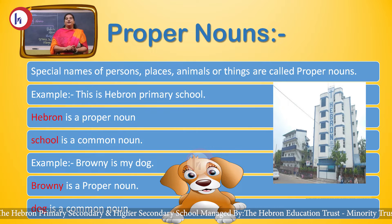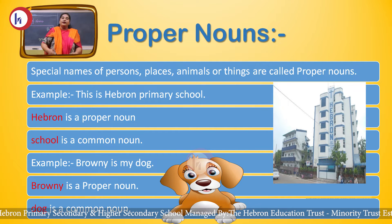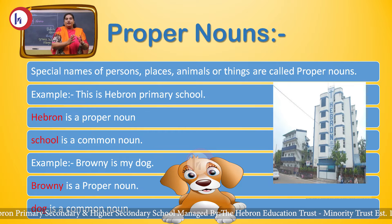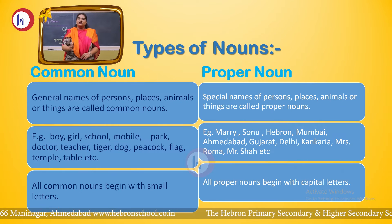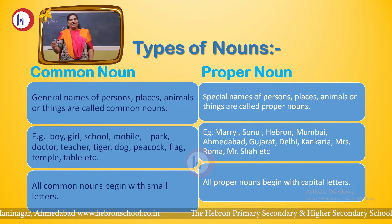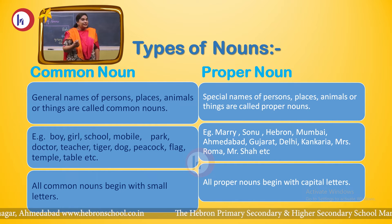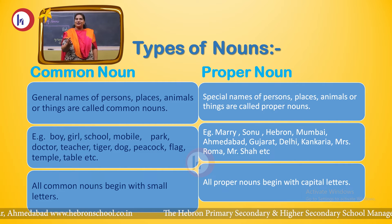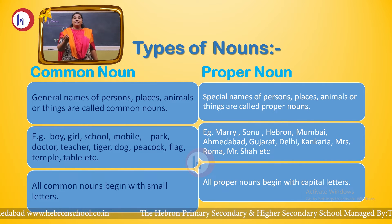I think it must be clear to you what is common noun and what is proper noun. Let's revise this topic once again. What is common noun? General name of person or place is known as common noun. Examples: teacher, doctor, school, mother, father, boy, girl, student, park, temple, church, etc.